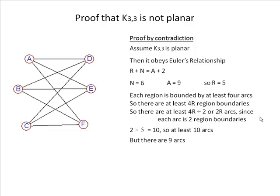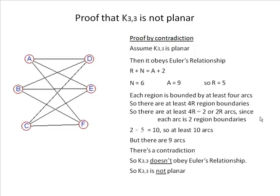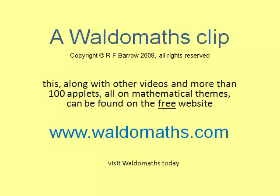But there are only 9 arcs. So there's a contradiction. K3,3 doesn't obey Euler's relationship and therefore it's not planar. Thank you.